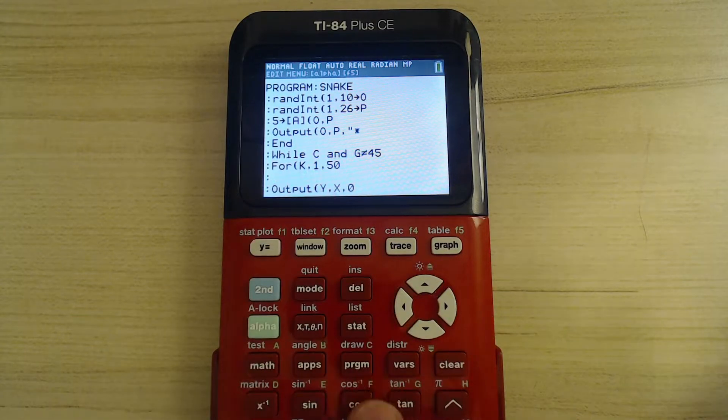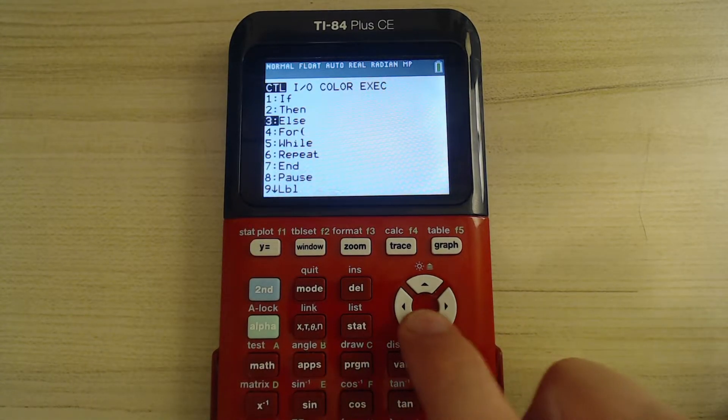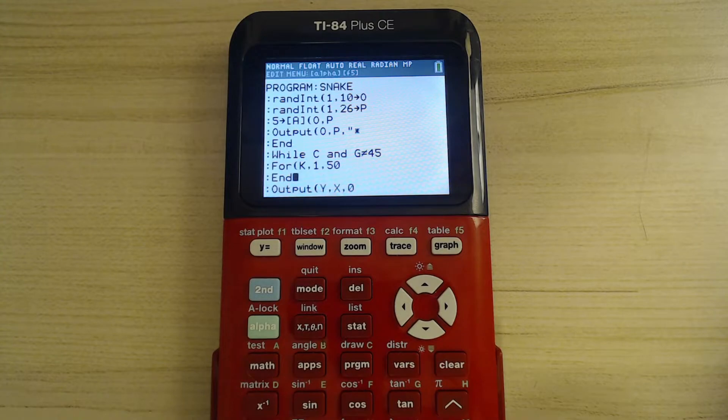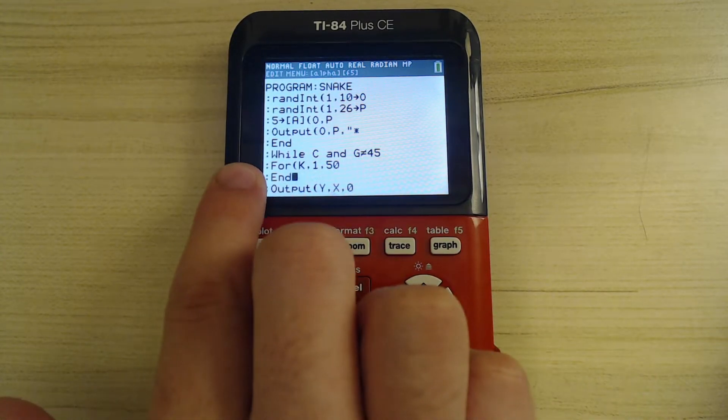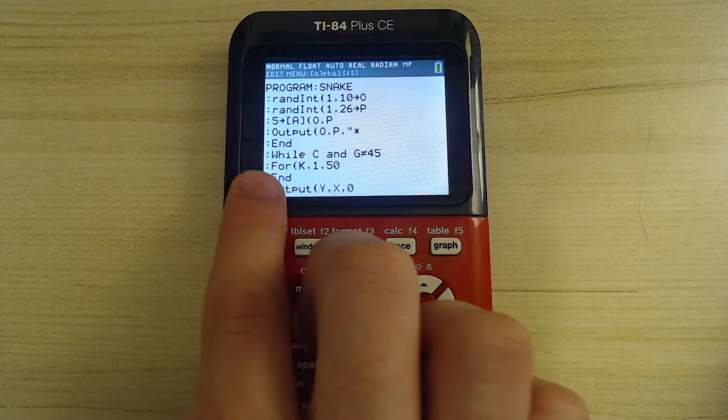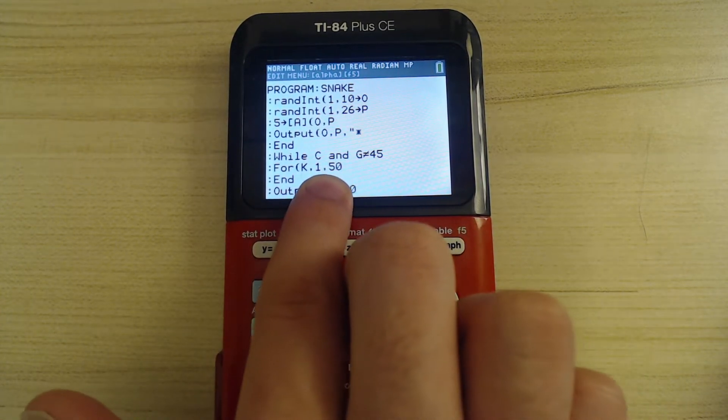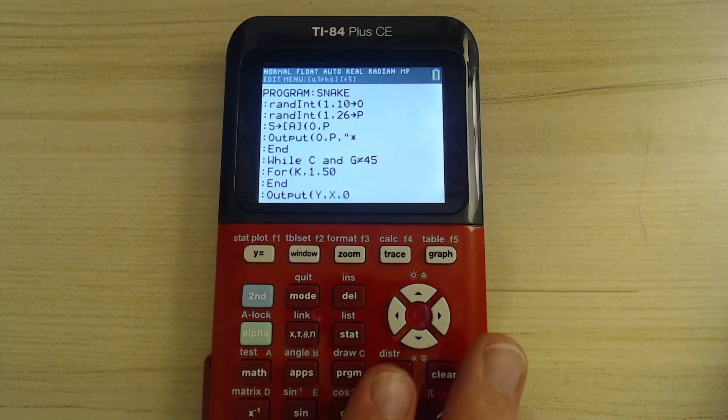And then on the second line, you're going to press program, and scroll down to number 7 and press enter. And basically, this is called a for loop. So it's just looping 50 times right now, and what that does is it slows down the program.